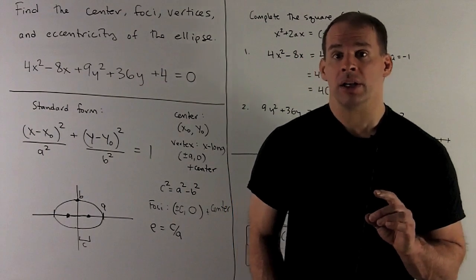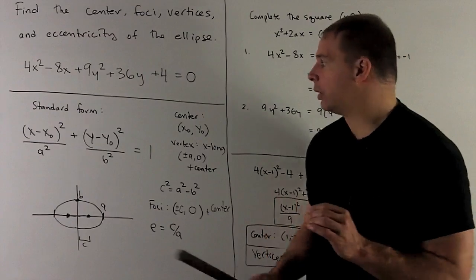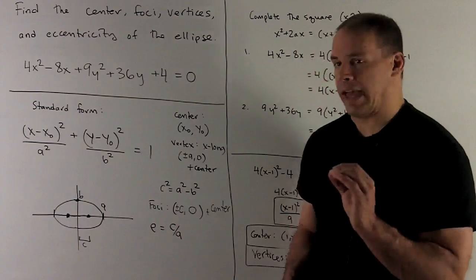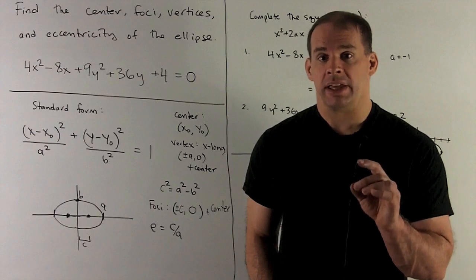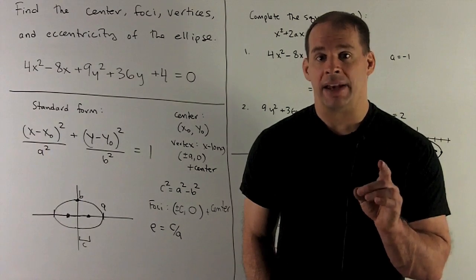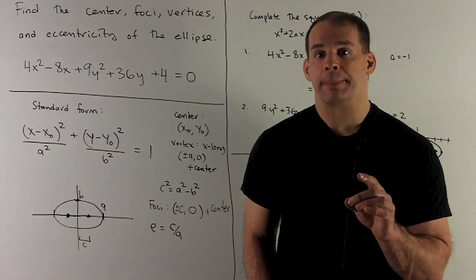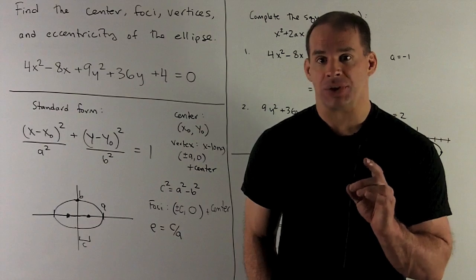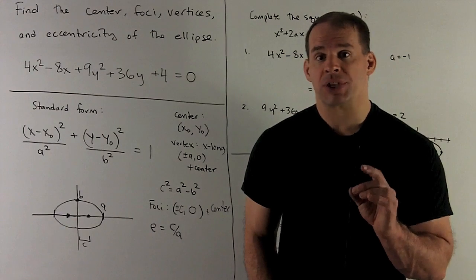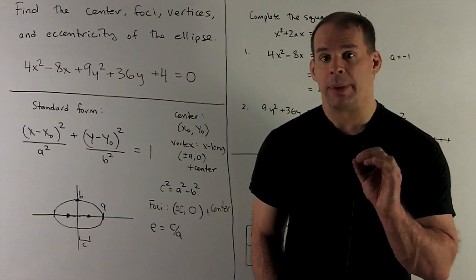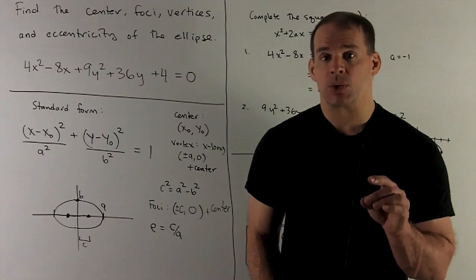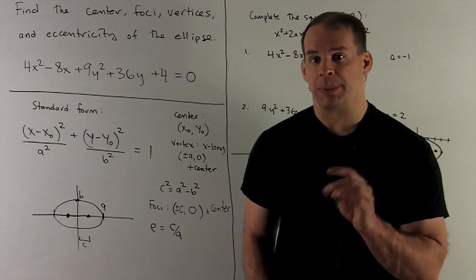Our center is going to be (x₀, y₀). Then, for our vertices, we're going to take x₀, add and subtract a from that, and we'll have the same y₀. For our foci, we're first going to solve for c, which will be positive. We'll have c² = a² - b².